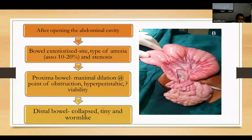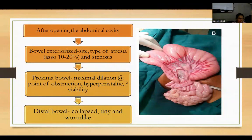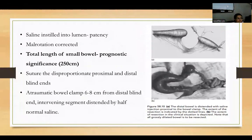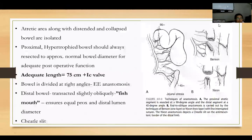For the proximal bowel, maximal dilatation is seen at the obstruction point, usually hyperperistaltic with questionable viability. The distal bowel is collapsed, tiny, and worm-like. Saline is instilled to check patency, and malrotation is corrected. Total bowel length — the most important prognostic factor — should ideally be 250 cm. The disproportionate proximal and distal blind ends are sutured; after applying atraumatic bowel clamps 6–8 cm from the distal blind end, the intervening segment is distended by injecting half-normal saline.